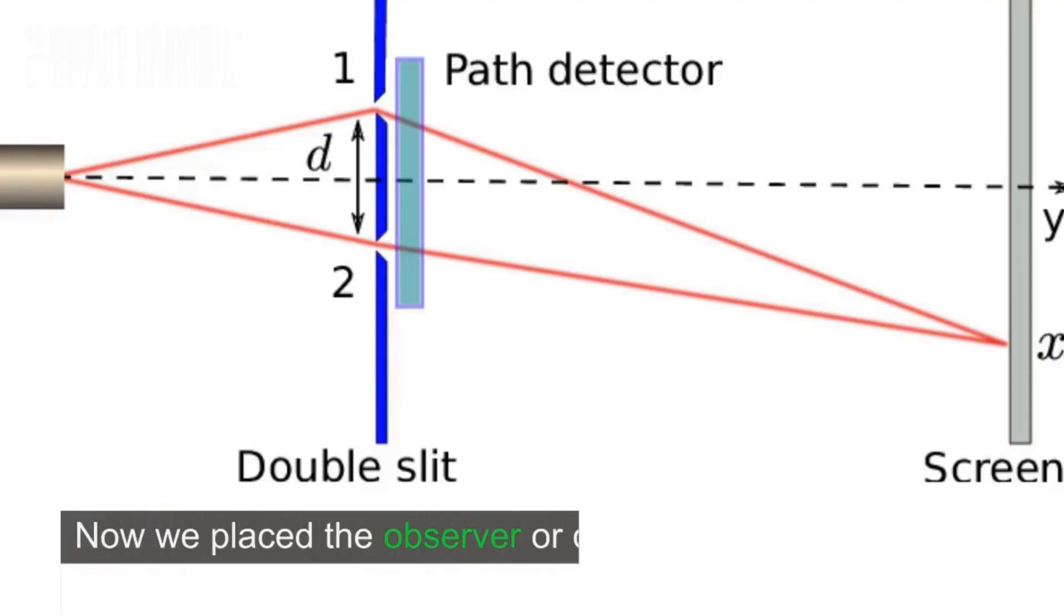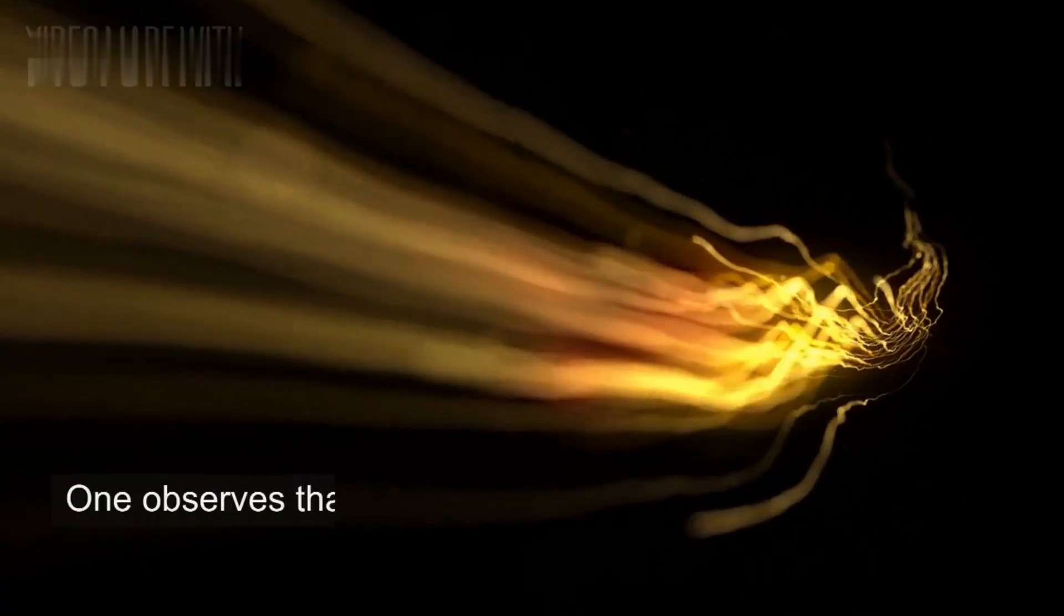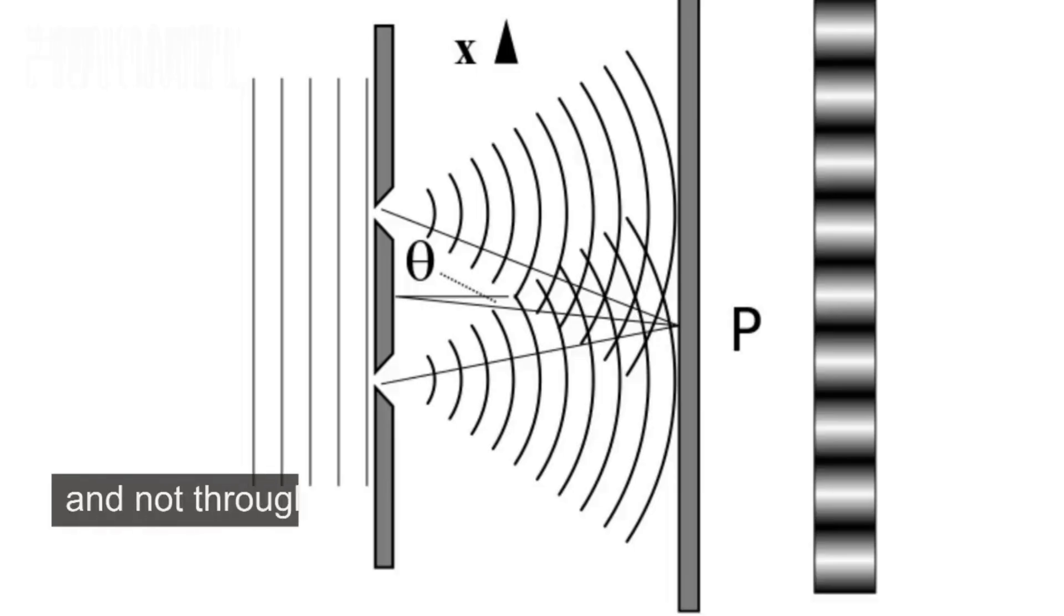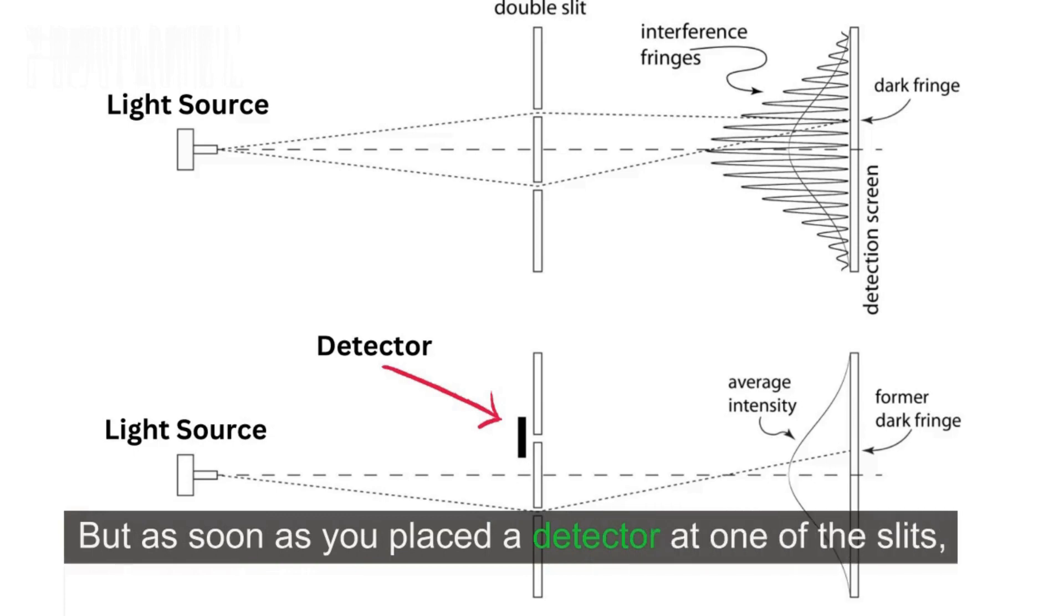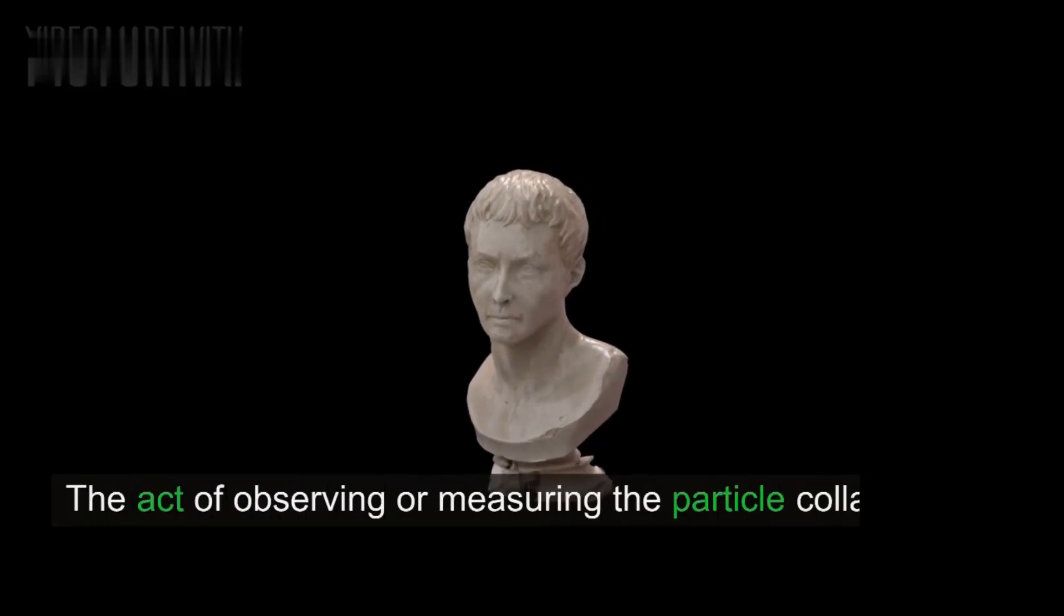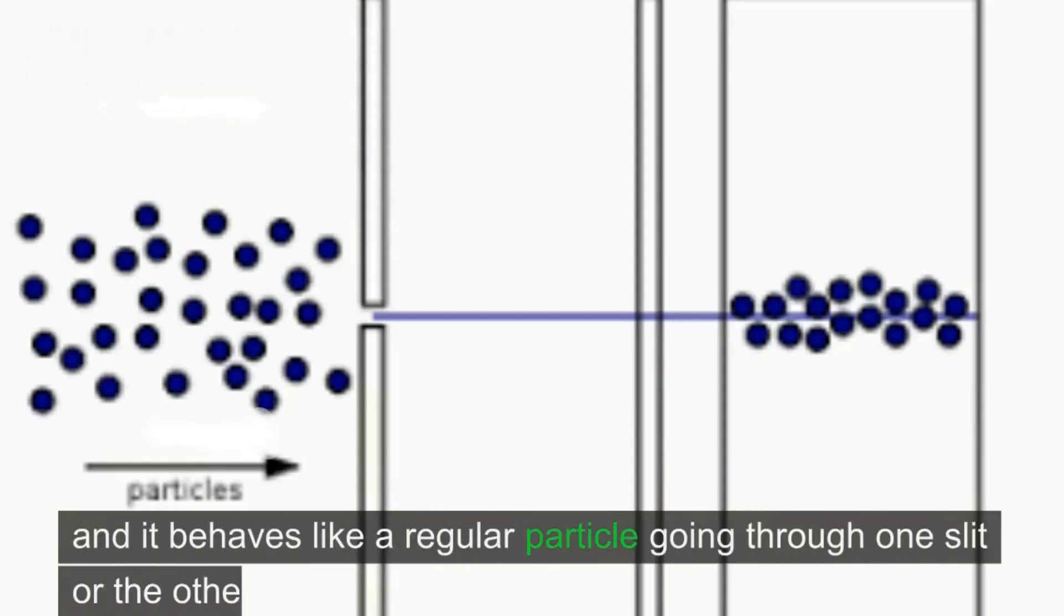Now we place the observer or detector at the position of the slits to observe which slit the light wave took. One observes that the detector detected the photon passes through one slit, and not through both slits. But as soon as you place a detector at one of the slits, the interference pattern disappears. The act of observing or measuring the particle collapses its wave-like behavior, and it behaves like a regular particle going through one slit or the other.